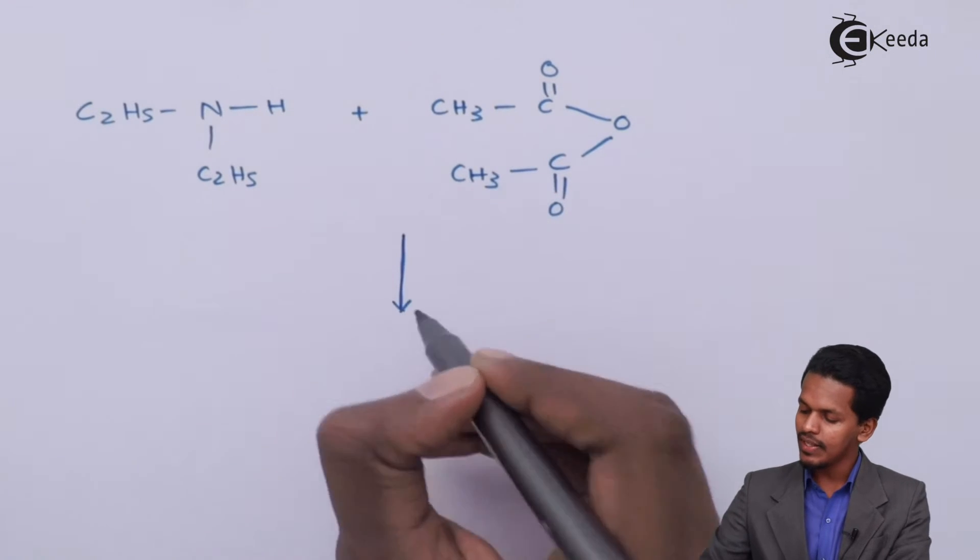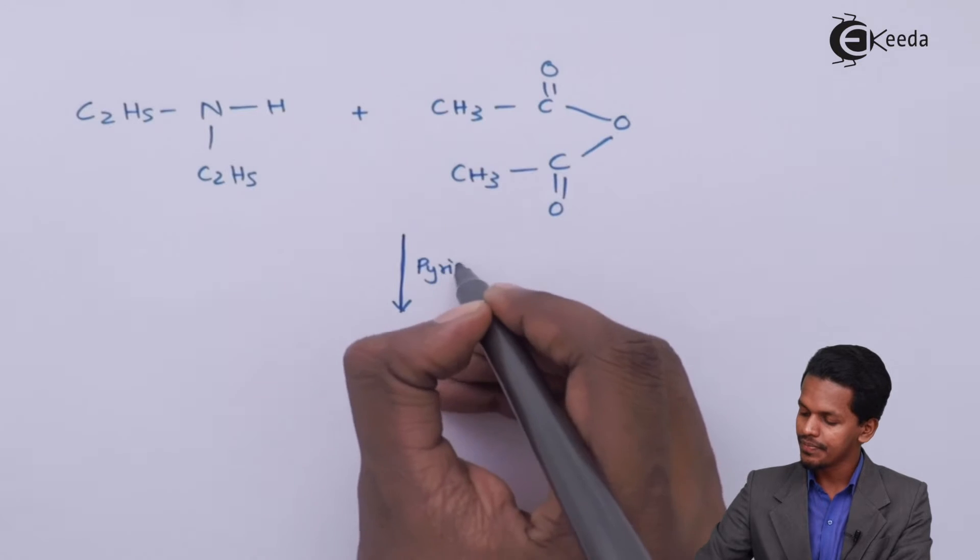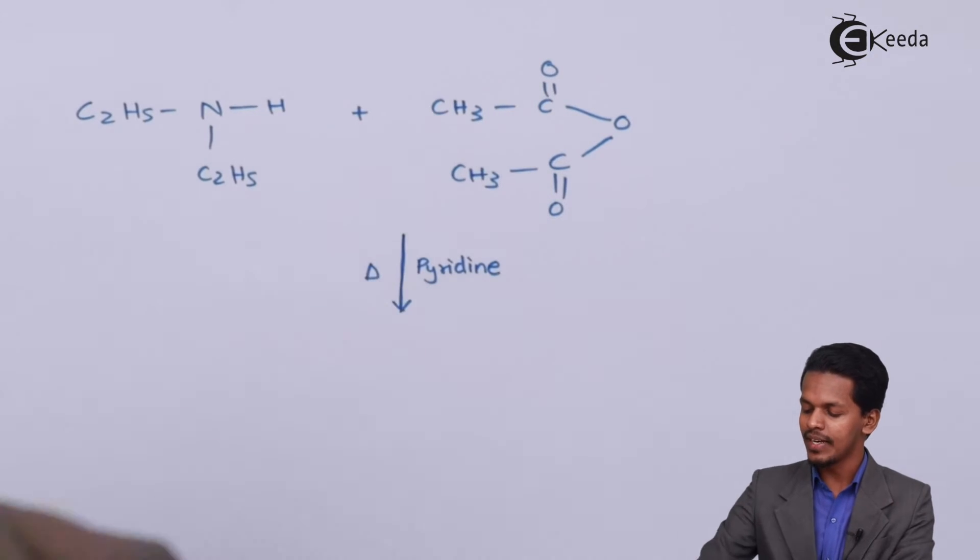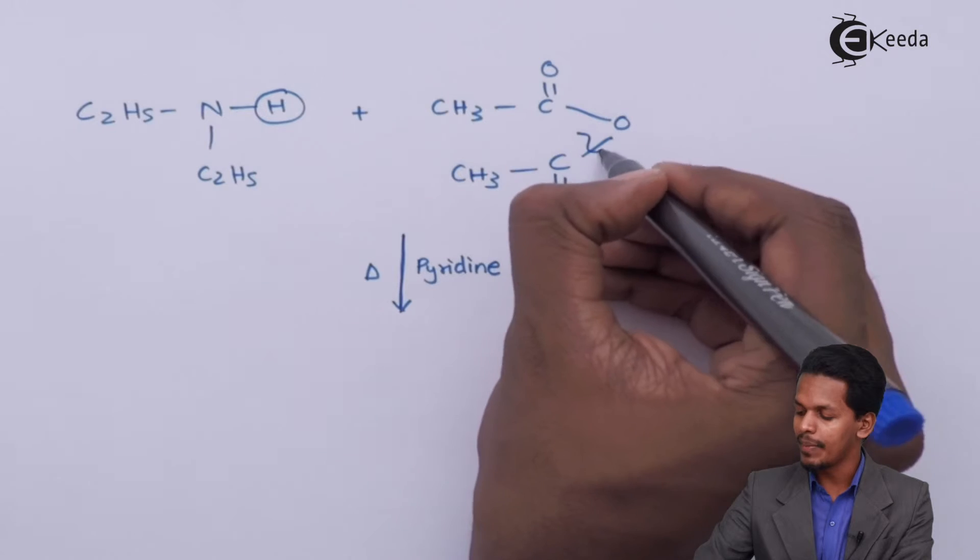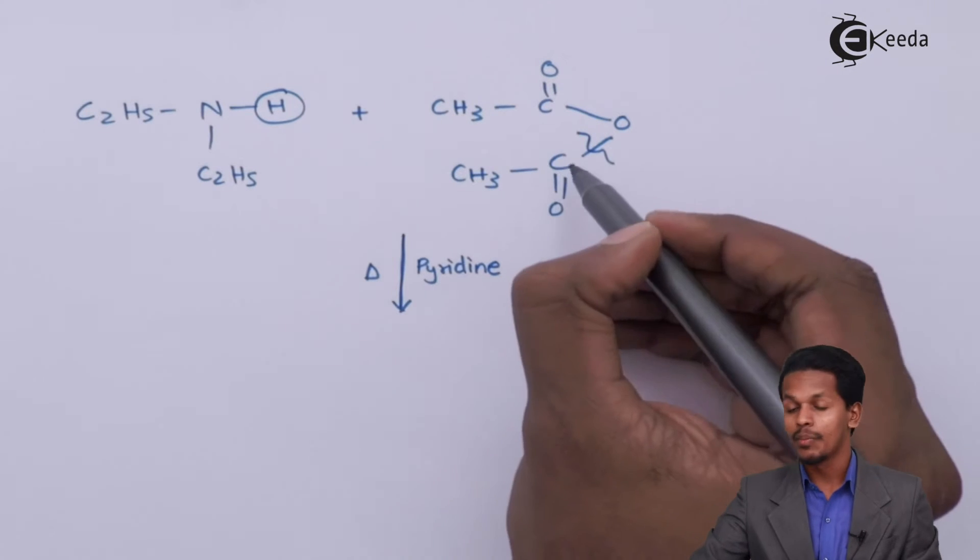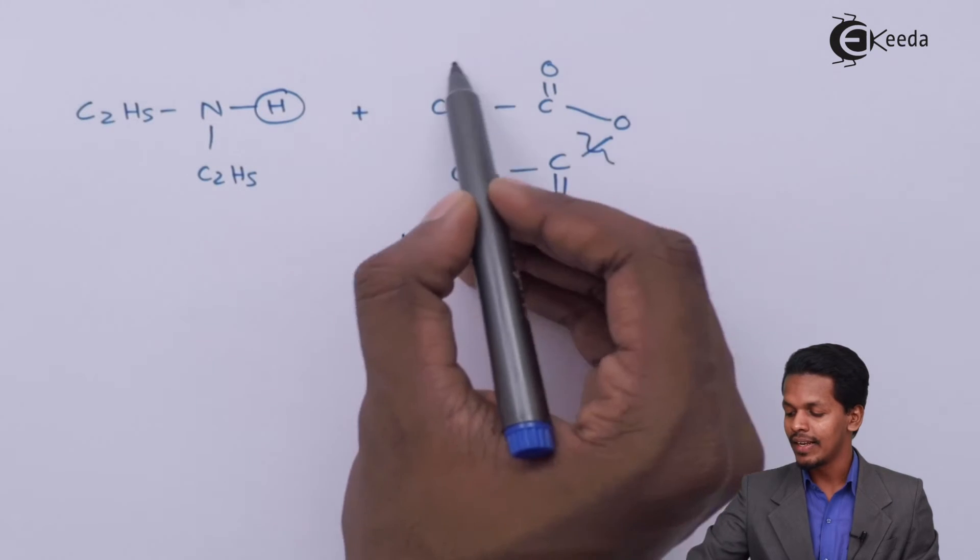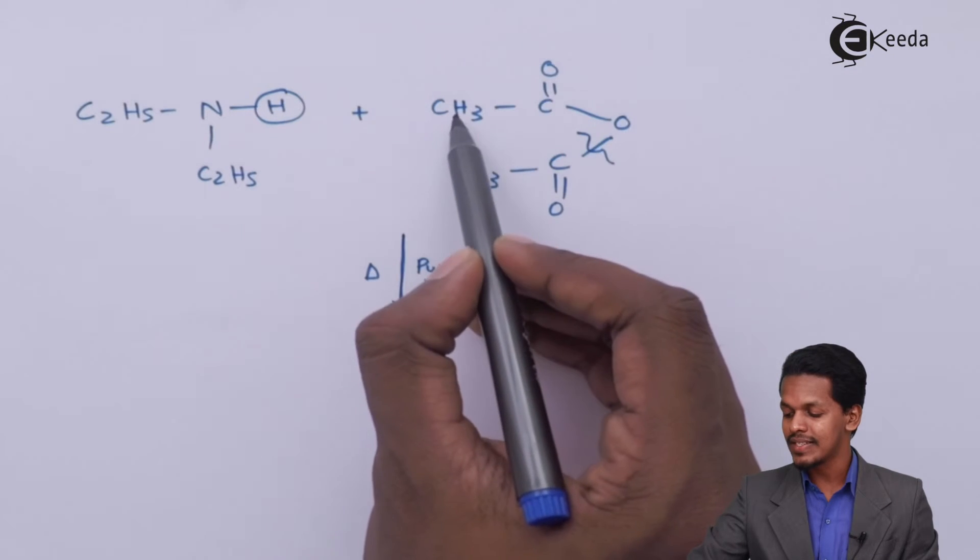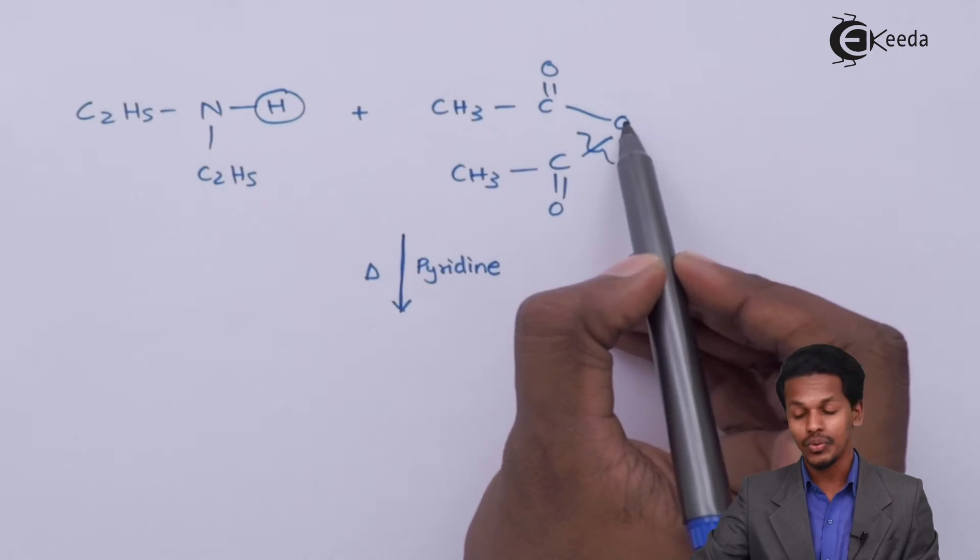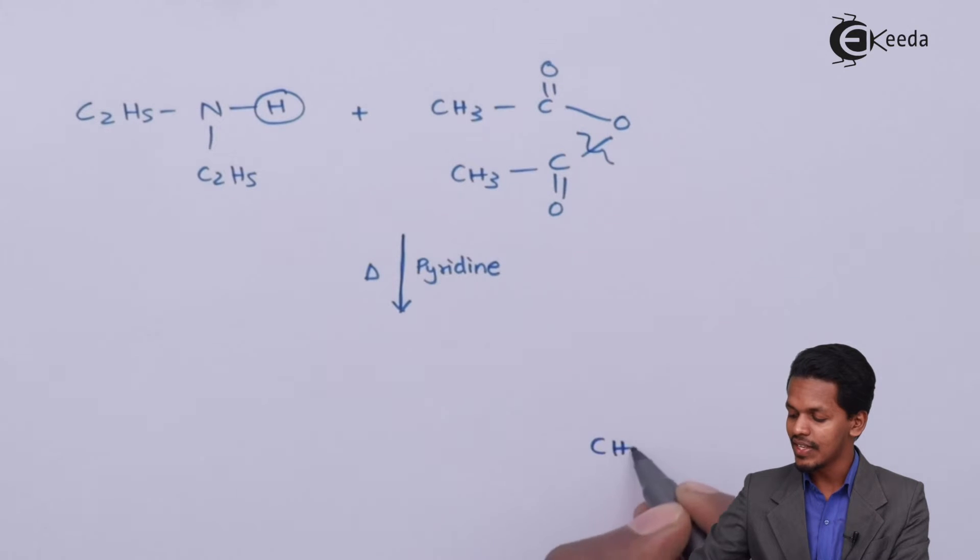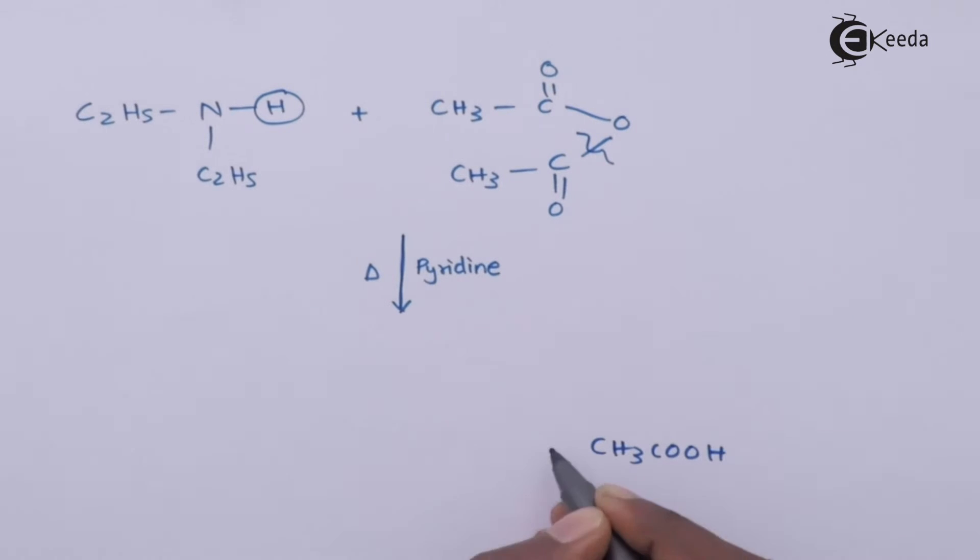The reaction proceeds in presence of pyridine. At higher temperature, this hydrogen, along with breaking of the bond between the carbon and oxygen, will be removed along with CH3C double bond OO in the form of CH3COOH.